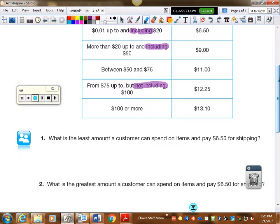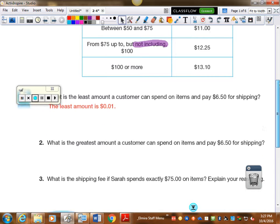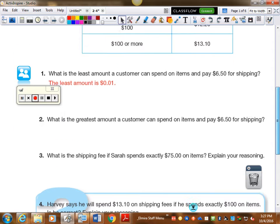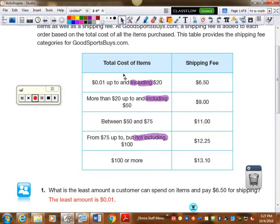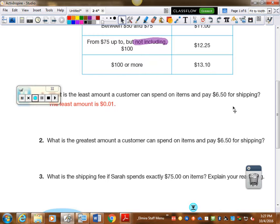So let's go down and answer some questions down here. What is the least amount a customer can spend on items and pay $6.50 for shipping? So $6.50 is from one penny up to $20 and including $20. So the smallest amount, the least amount they can pay is one penny. I'm not sure what you can buy for a penny anymore. I can't think of anything off the top of my head, but you're going to pay $6.50 to ship it.